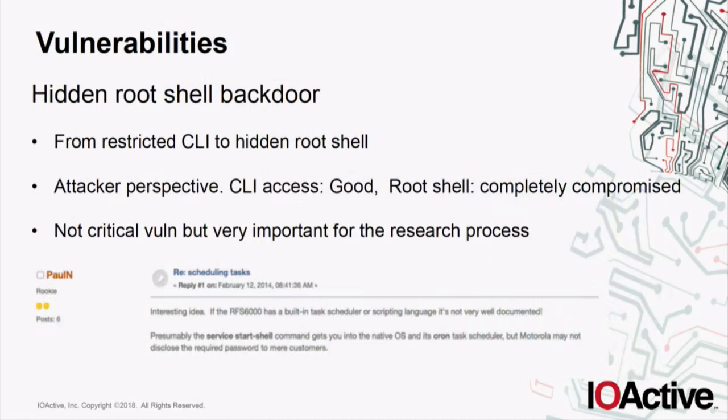Let's start with the vulnerabilities. The first one is not a really critical one, but it was really important for the research because it's a hidden root shell — kind of a backdoor. When you get a root shell, it makes the research process much easier. It's a kind of privilege escalation vulnerability because you need access to the command-line interface to get that root shell. If the attacker has access to the CLI, once they get a root shell, the device is completely compromised.